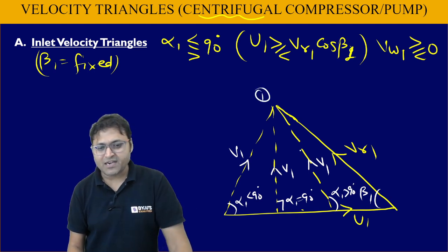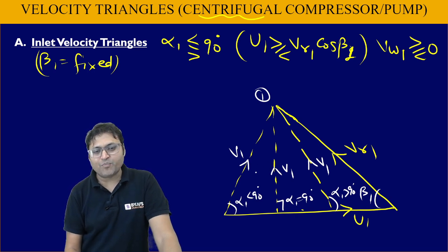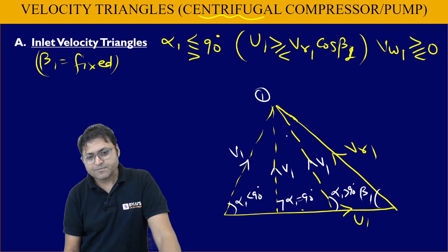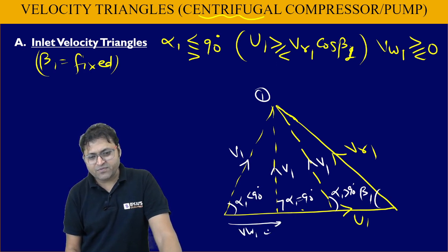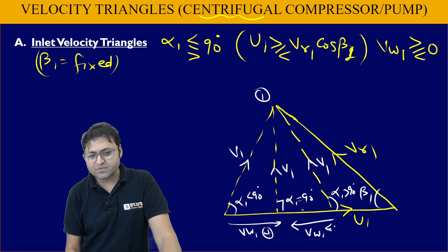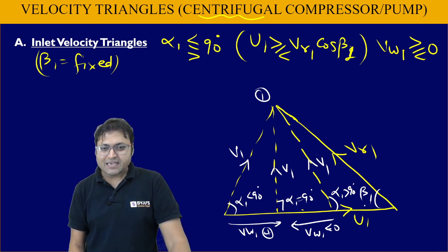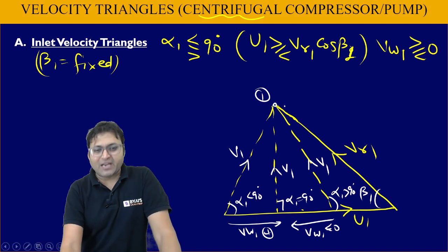This is how we draw these velocity triangles. If we resolve V1 into components: when α1 is less than 90 degrees, Vw1 is positive (in the direction of blade motion), and U1 will be greater than Vr1·cos β1. When α1 is greater than 90 degrees, Vw1 is negative. These are the three possibilities for the inlet velocity triangle.